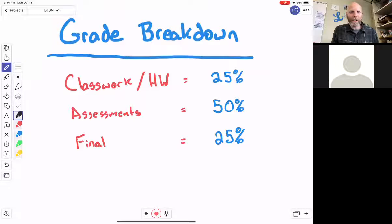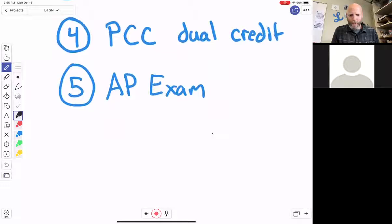And then we do have a final at the end of the semesters, and those finals count for 25% of that semester grade. And that is part of our dual credit commitment. That's what the Portland Community College asks that we do. So that is where we set our final percentage at, but we'll make sure we prep them so that they're ready for that.